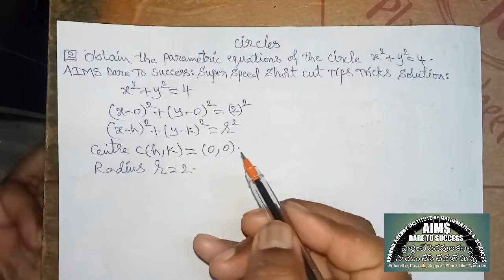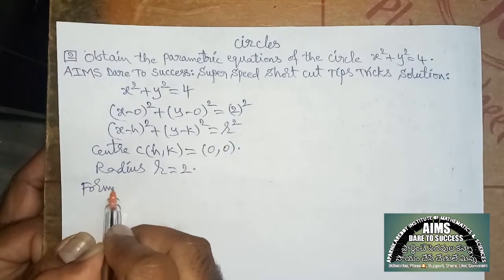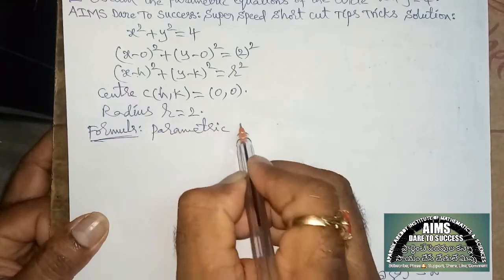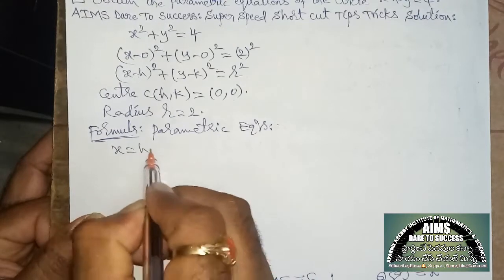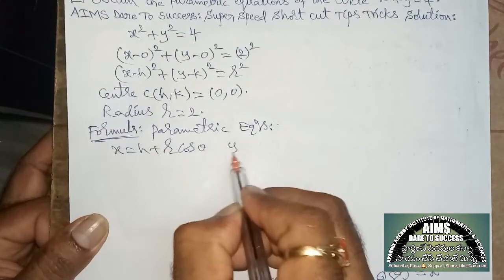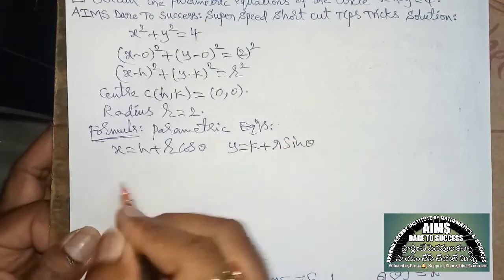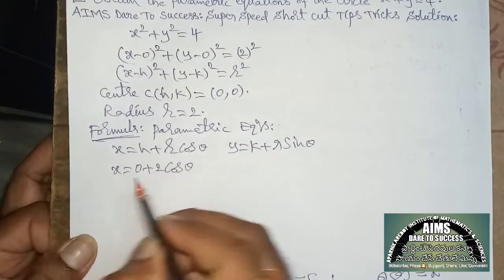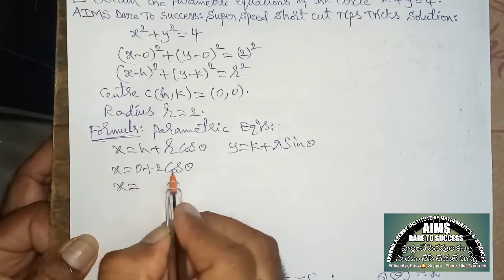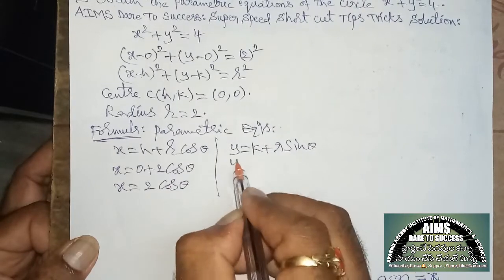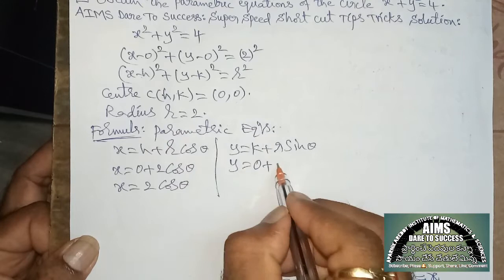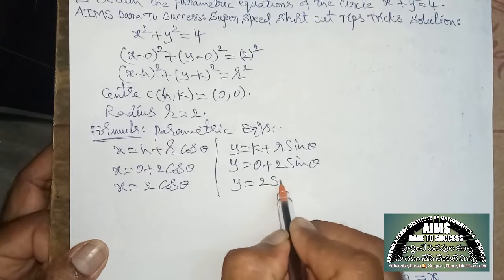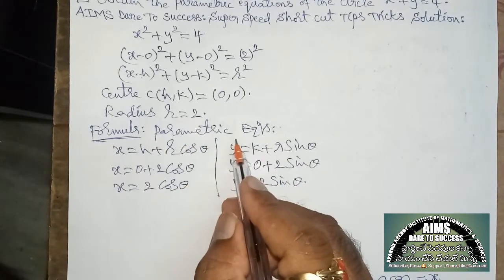The center is (0, 0). Now writing the radius: r² = 4, so r = 2. Using the simplest parametric equations formula — x = h + r·cos θ and y = k + r·sin θ — substituting gives x = 0 + 2·cos θ = 2 cos θ, and y = 0 + 2·sin θ = 2 sin θ. These are the parametric equations.